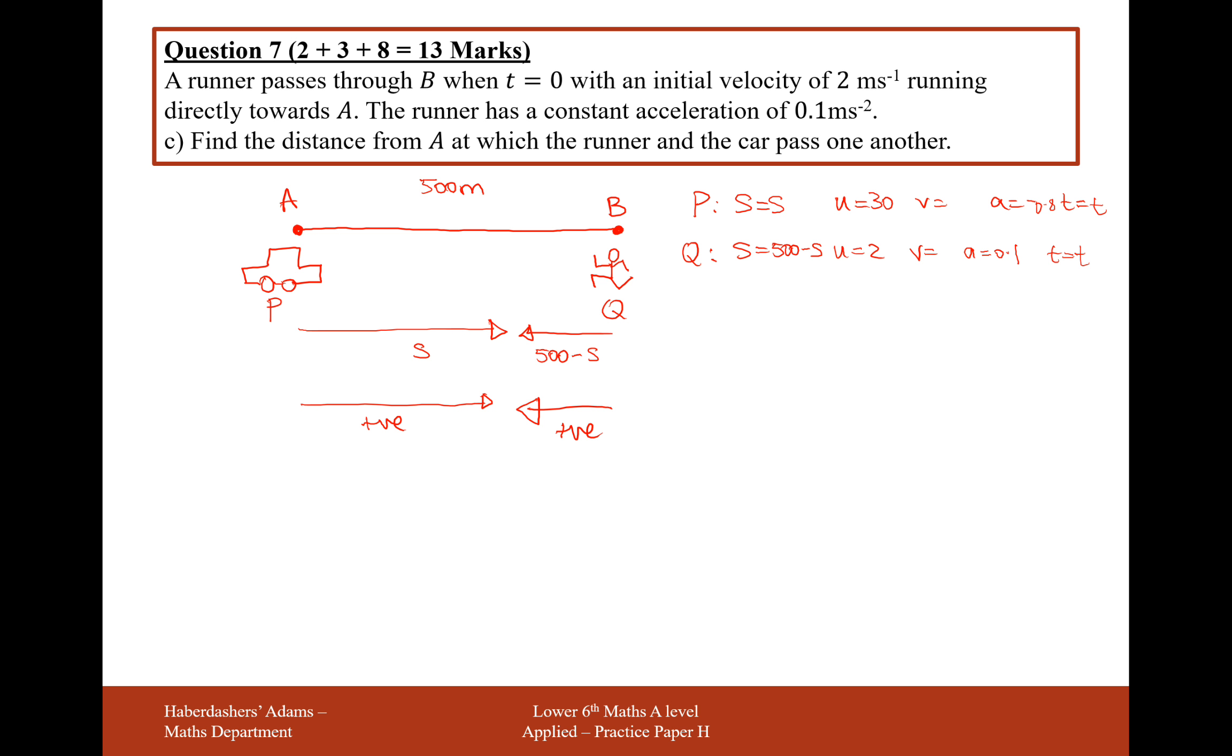This is one of these questions where we need simultaneous equations from a SUVAT point of view. For both of these equations, the formula we're going to be using is S equals UT plus half AT squared, because we don't mind about the final velocity. For P, the formula is going to be S equals 30T plus half of minus 0.8, so that's take away 0.4T squared.